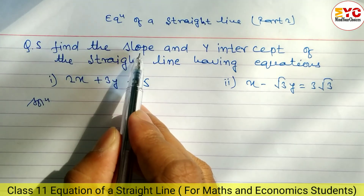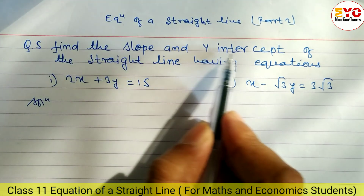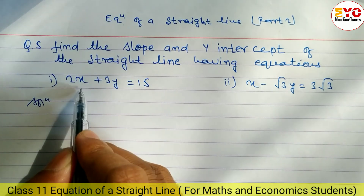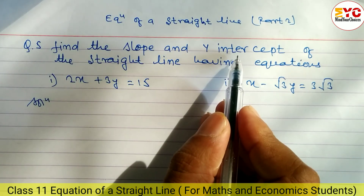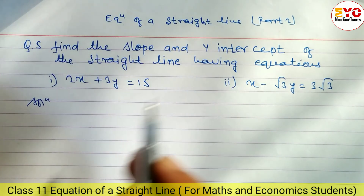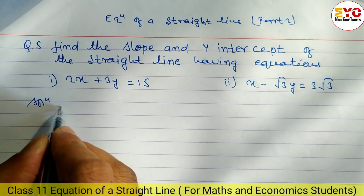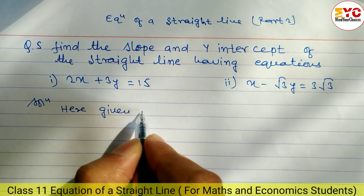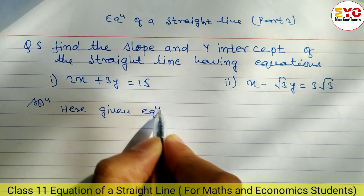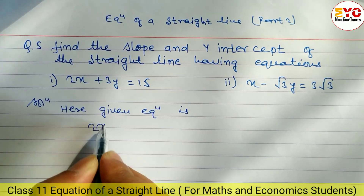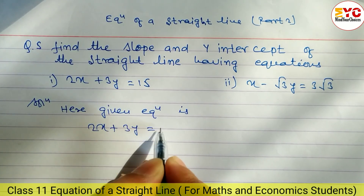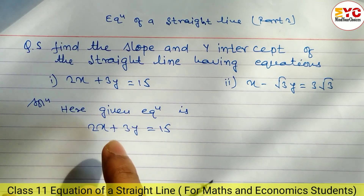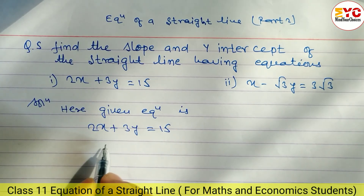First question: find the slope and y-intercept of the straight line having equation 2x + 3y = 15. We have to find out slope as well as y-intercept. We have to convert this into the form y = mx + c.